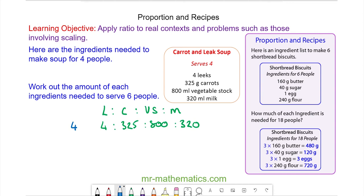I need six people, so I'm going to work out the value for one person by dividing four by itself to make one, then multiplying by six. I do the same to each ingredient: divide it by four, then multiply it by six.